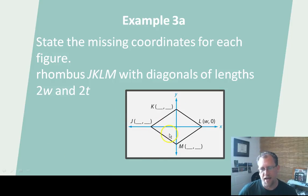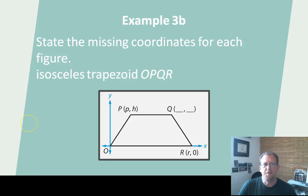And then this one, the diagonals are 2T. So that means, again, this dimension is T and this dimension is T. So this would be 0, T and this would be 0, negative T. Kind of an interesting question.